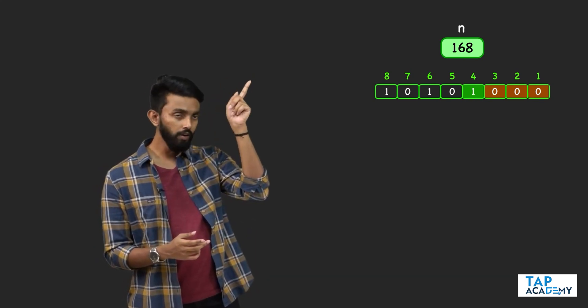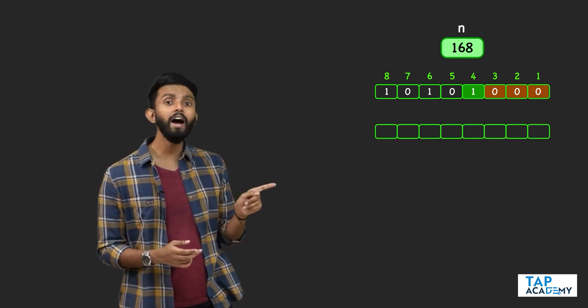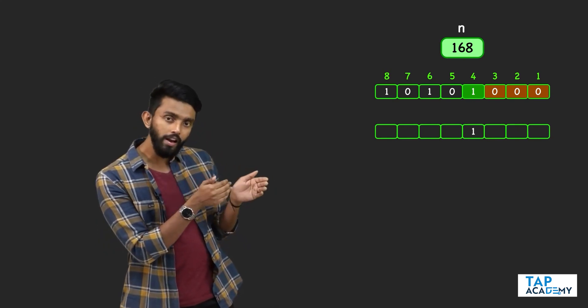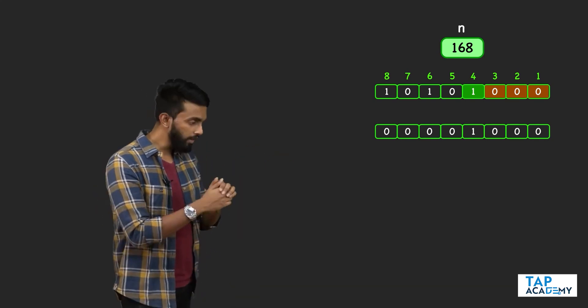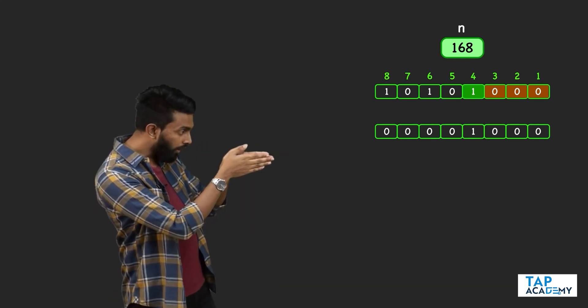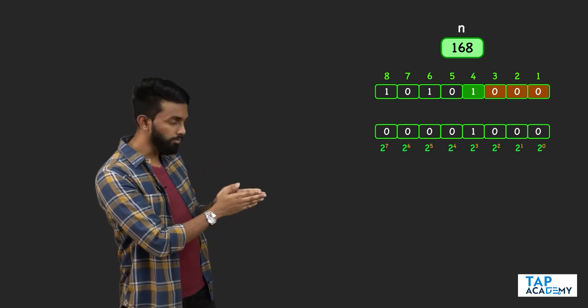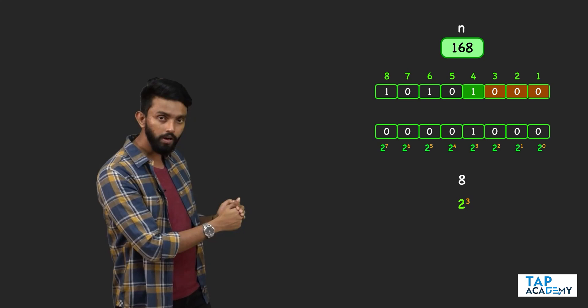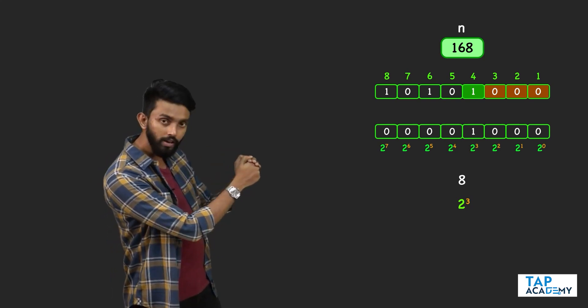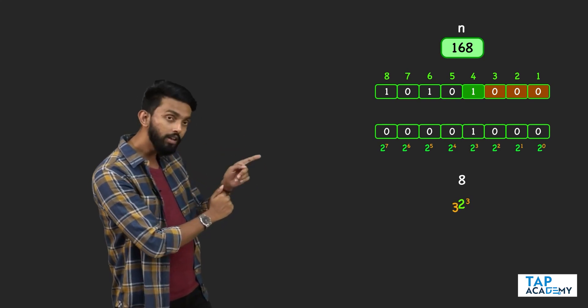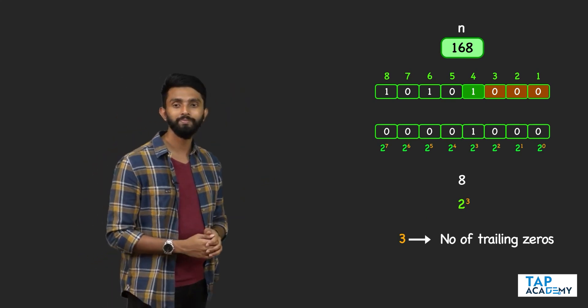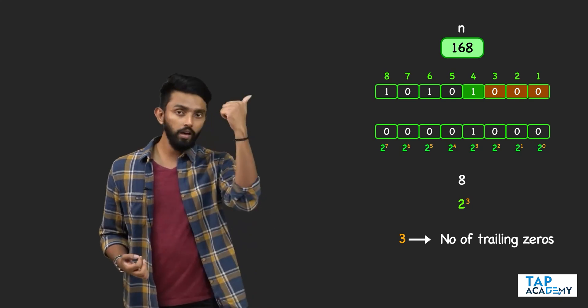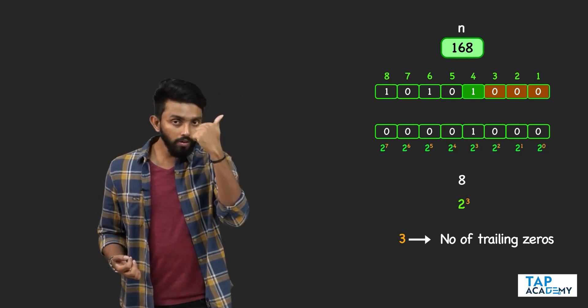If I could finally isolate only the rightmost set bit and make all other bits to the left and right as zeros, then if I convert this into decimal I'll get 8. Eight is 2 to the power 3. Look at what is in the power: 3. Don't you think 3 is the number of trailing zeros?